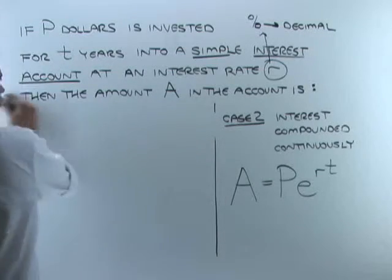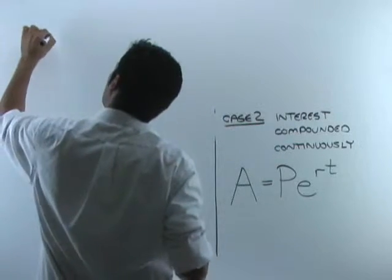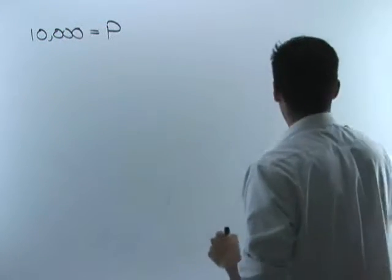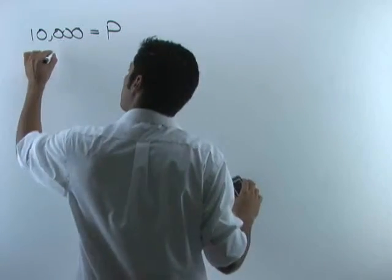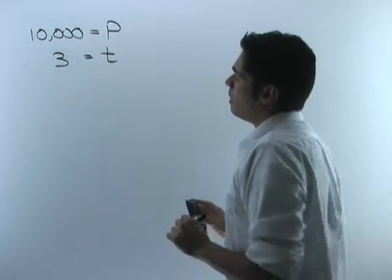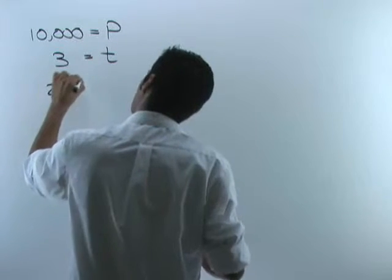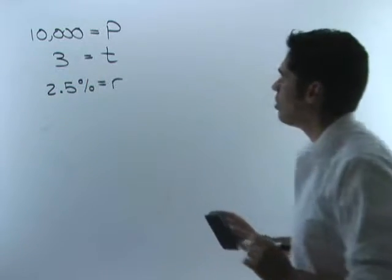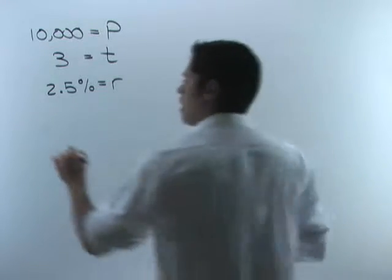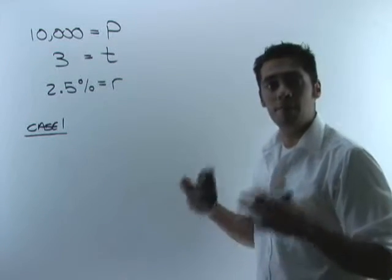Let's work through an example. We're going to take $10,000 and invest it into a simple interest account, so P equals 10,000. We'll leave it in for three years, so T equals 3. The interest rate is 2.5%, so R equals 2.5%. Now let's compute how much money would be in the account in both cases.